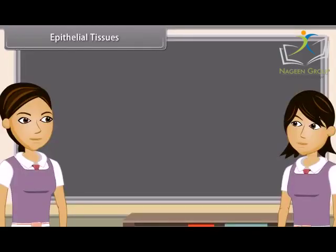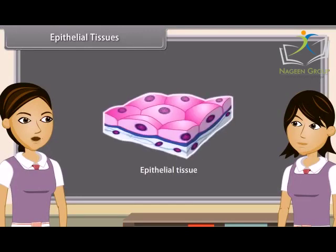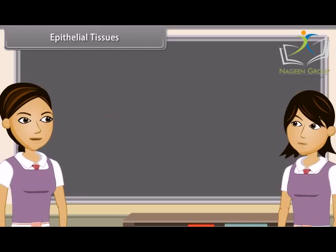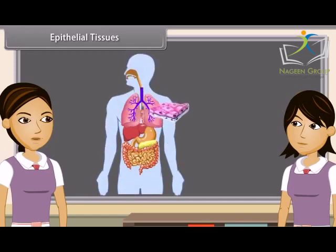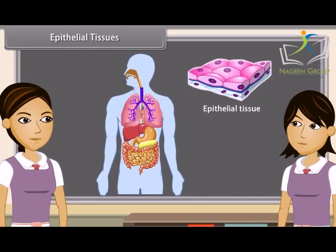Epithelial tissues: Tissues which cover all the organs of the body externally and also line hollow organs internally are known as epithelial tissue. The cells of epithelial tissue are tightly packed and form a continuous sheet. There is no intercellular space and matrix between these cells. Epithelial cells are present in skin, lining of buccal cavity, alimentary canal, kidney tubules, lungs and glands.